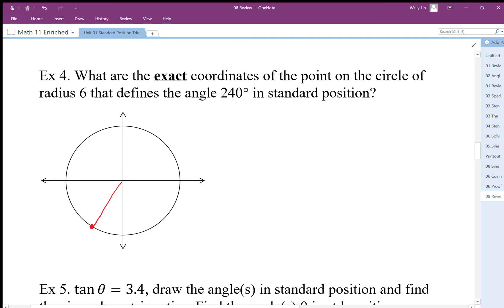What are the exact coordinates of the point on the circle with radius 6? We know that we have to relate this to our special angles. For a special triangle, the long side is root 3, the short side is 1, and the hypotenuse is 2.